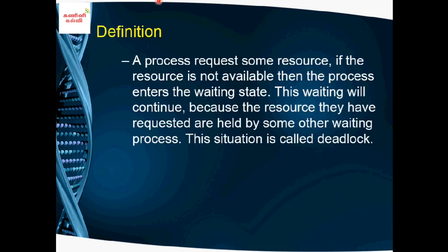By definition, a process requests some resource. If the resource is not available, then the process enters the waiting state. For example, a process requests a resource such as CPU or memory. If the resource is not available because it is held by some other waiting process, this waiting will continue indefinitely.